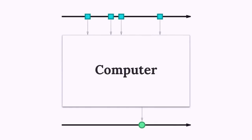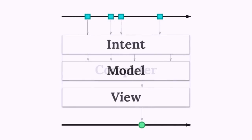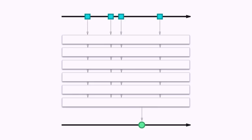So it turns out this big massive computer function can be decomposed into smaller functions: intent, model, and view. Intent translates the user's interactions, the model does the heavy lifting, and the view translates back to cat pictures. And if you're not satisfied with this decomposition you can split it into two functions or six functions. These are just functions, and as a good programmer you should know when to split a function — whenever it gets too big.